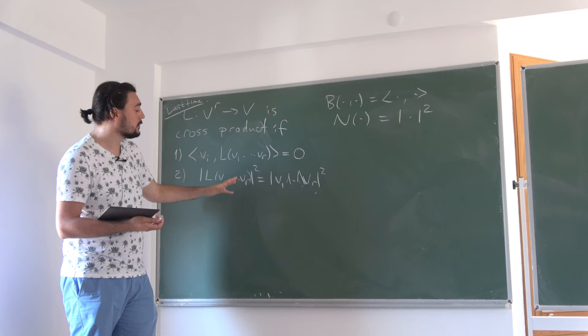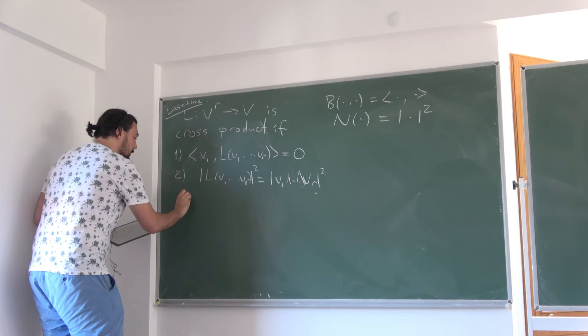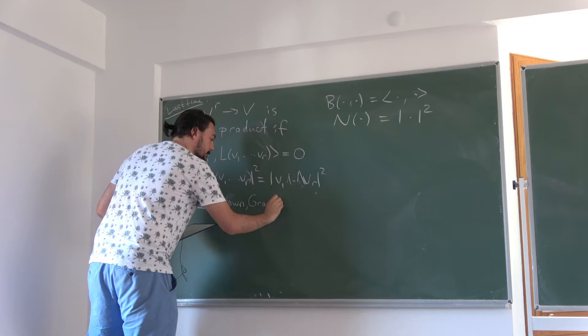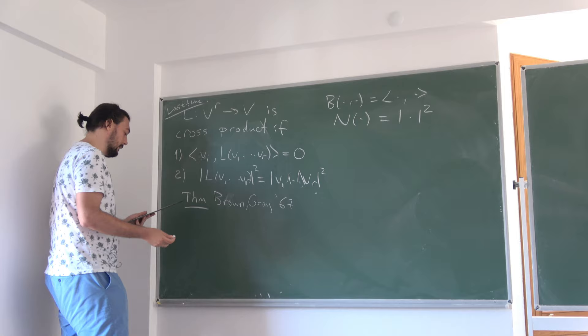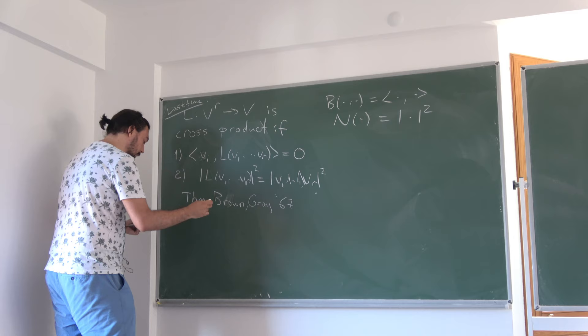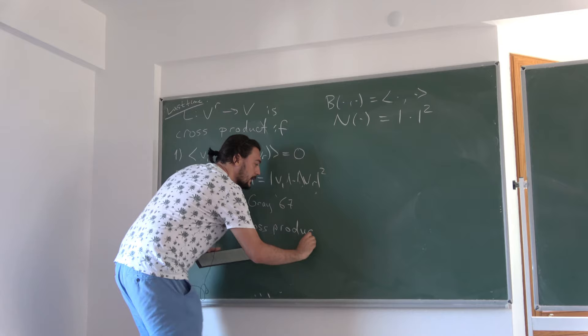If these are orthogonal, this equality reduces to the norm product of each one of those things, and also if L is an alternating map. I said last time that Brown and Gray proved a theorem in 1967 which classifies all cross products in vector spaces over the reals, and I believe also over complex numbers. What they say is that an R-fold cross product exists only in the following cases.